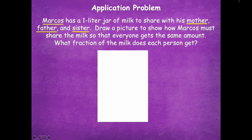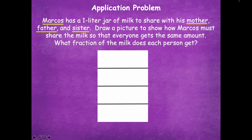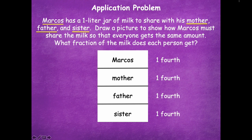When I look at this, first I underlined all the people so I wouldn't forget how many pieces to partition my rectangle into. There's Marcos, his mother, his father, and his sister — that's four people sharing the jar of milk. So I need to partition it into four equal parts. I did it in half, then each part in half again to make them even. Each person gets one-fourth of the milk.